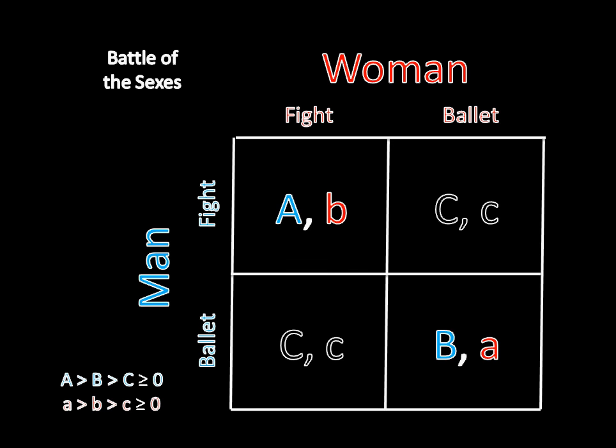Thus, we have three equilibria. In pure strategies, both players go to the fight or they both go to the ballet. And in mixed strategies, each player goes to their preferred entertainment venue with probability a minus c over a plus b minus 2c. And that's the end of the game.